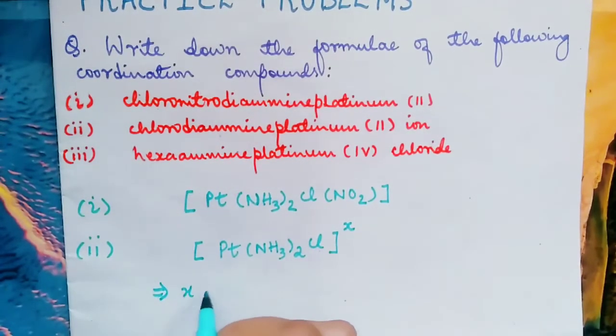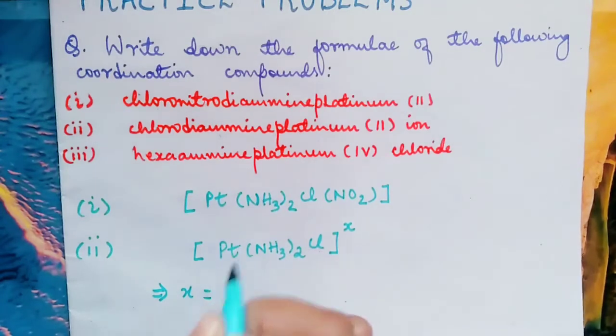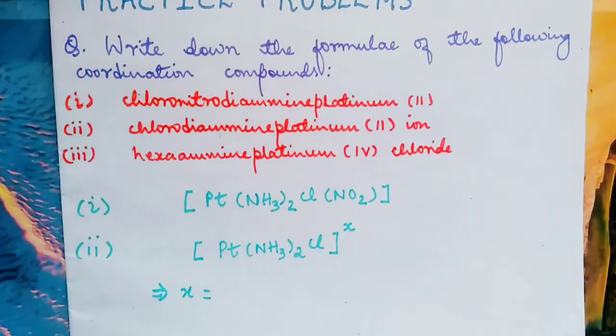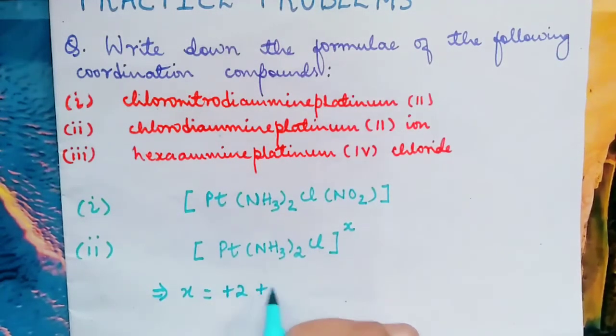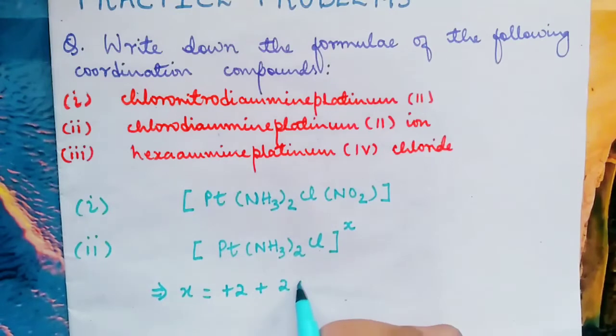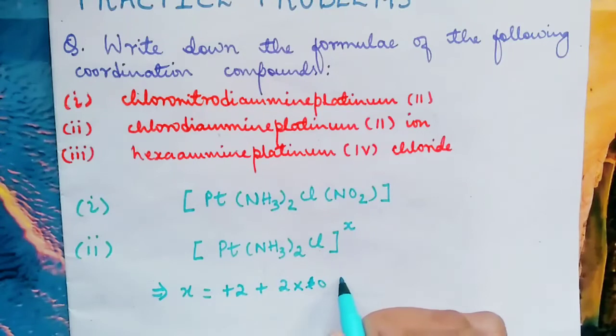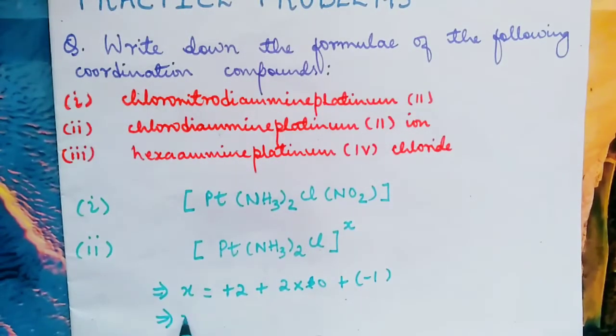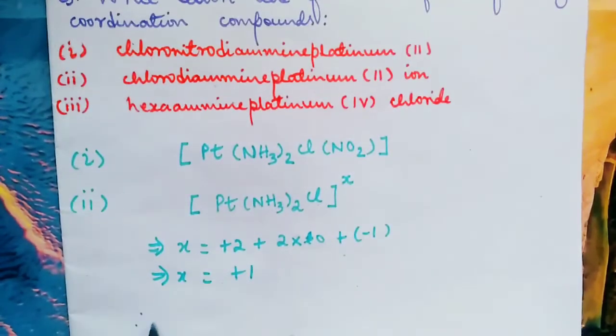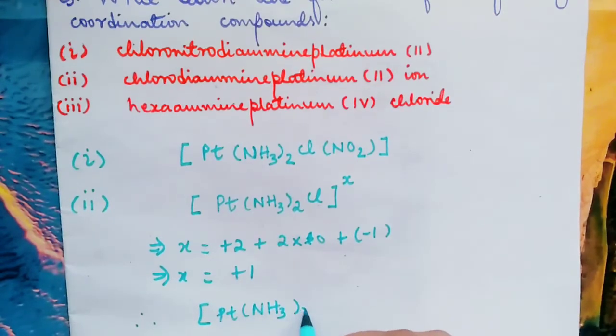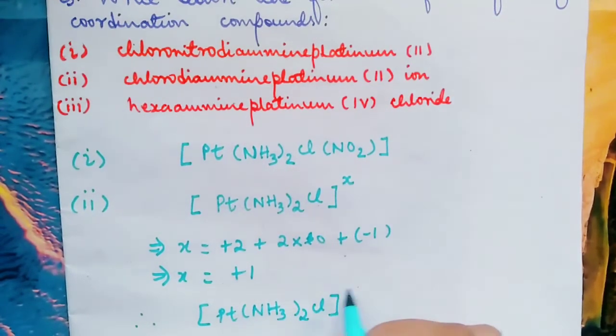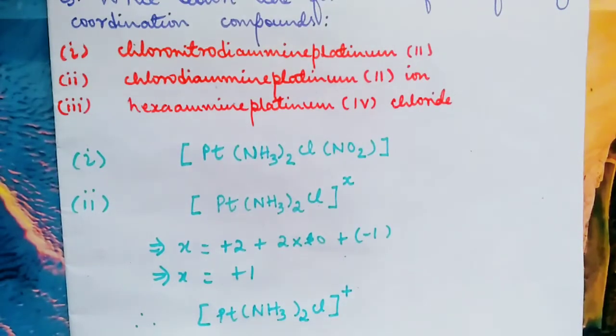How to find X? What is the oxidation state of platinum here? It is +2. And what is the charge carried by NH3? It is 0. And Cl is -1. So from here we get X to be +1.